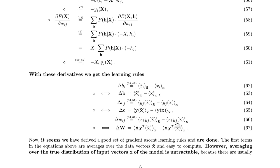That looks like we are done — we have a learning rule. But while the first average can be calculated if we have 1000 data points, the term on the right side would have to be averaged over all possible states of x. If you have 100 visible units, that would be 2^100 possible states, which is just prohibitive. So we have to find a way to approximate this term — the average over the model distribution — while the left term is the average over the data distribution.